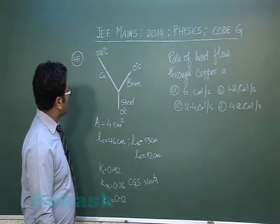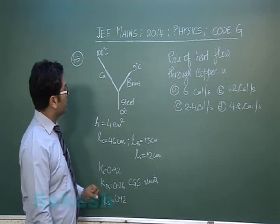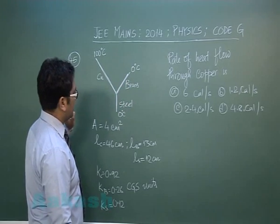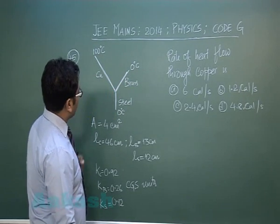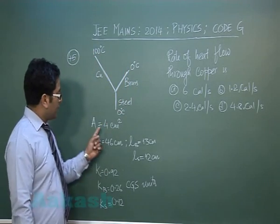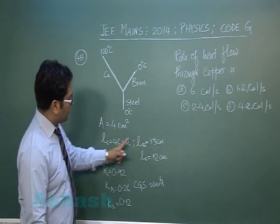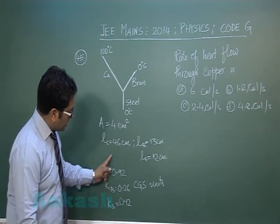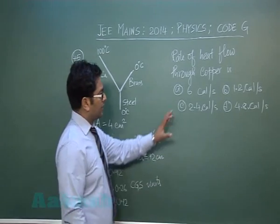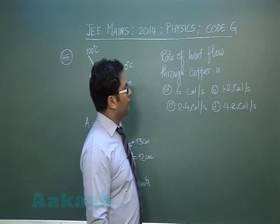Question number 45 is about heat transfer, set from the topic of conduction. As shown in the figure, copper, brass, and steel are three rods forming a Y-shape. The ends are maintained at 100°C, 0°C, and 0°C. The area of cross section of each rod is 4 cm². The length of copper, brass, and steel and their thermal conductivities are given — all in CGS units — and we need to find the rate of heat flow through copper.